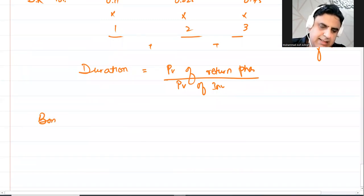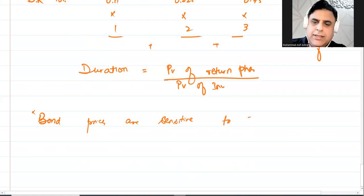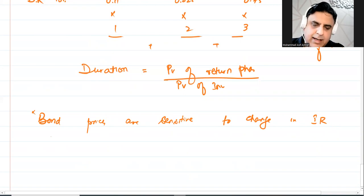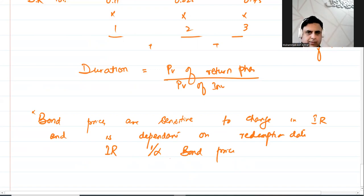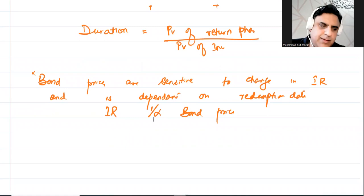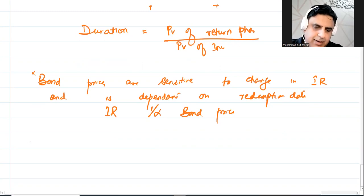Always remember that bond prices are sensitive to changes in interest rate, and this sensitivity is dependent on the redemption date. The relationship between interest rate and bond prices is inverse: interest rate goes up, bond prices go down; interest rate goes down, bond prices go up.